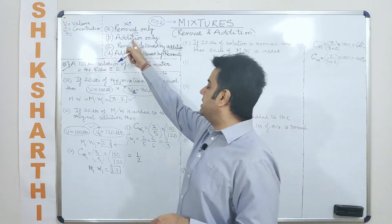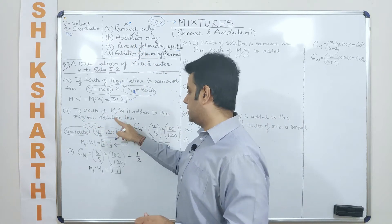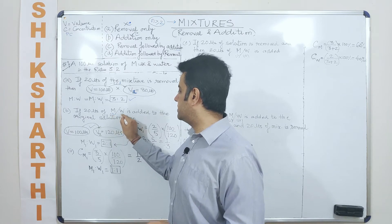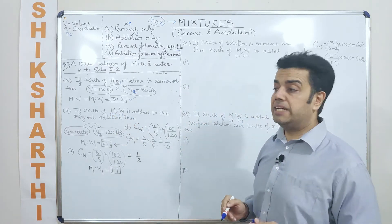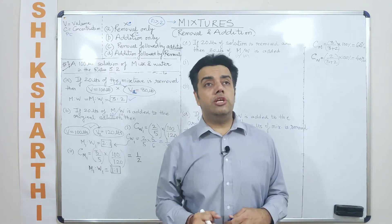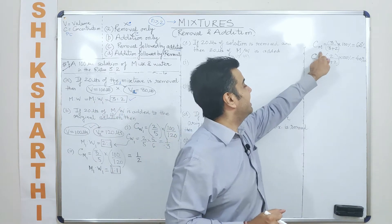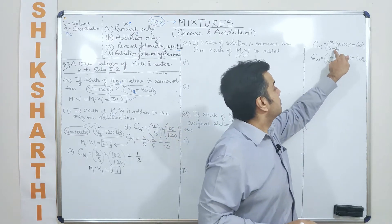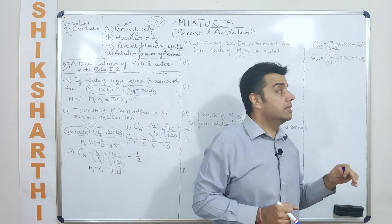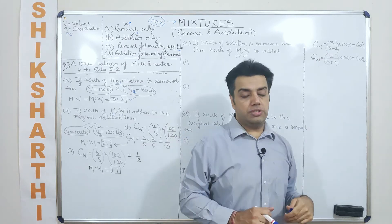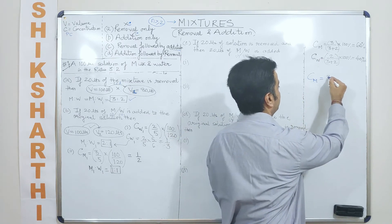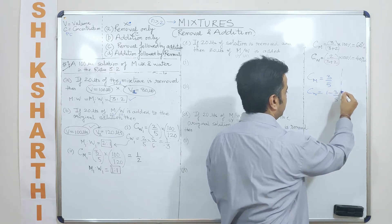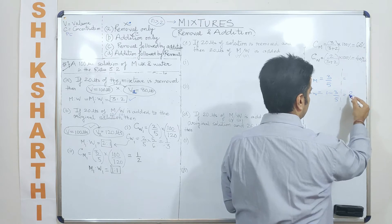In the second case, we are talking about addition only — either milk or water is added. The original concentration of milk is parts of milk divided by total parts, which is 3 divided by 3 plus 2, giving 3/5 or 60%. Similarly, the concentration of water is 1 minus 3/5, which is 2/5. Alternatively, we could have calculated water as 2/5 and milk as 1 minus 2/5.